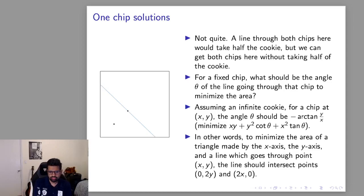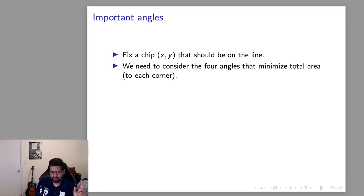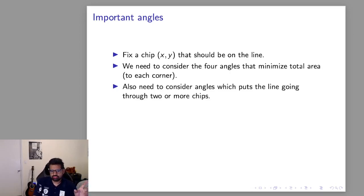Okay so we've handled the corner case and every other line we want to consider goes through two points. So let's fix one specific chip. We need to try the four corners using this arctan formula we discovered on the last slide and then we also need to consider all lines which go through two or more chips.